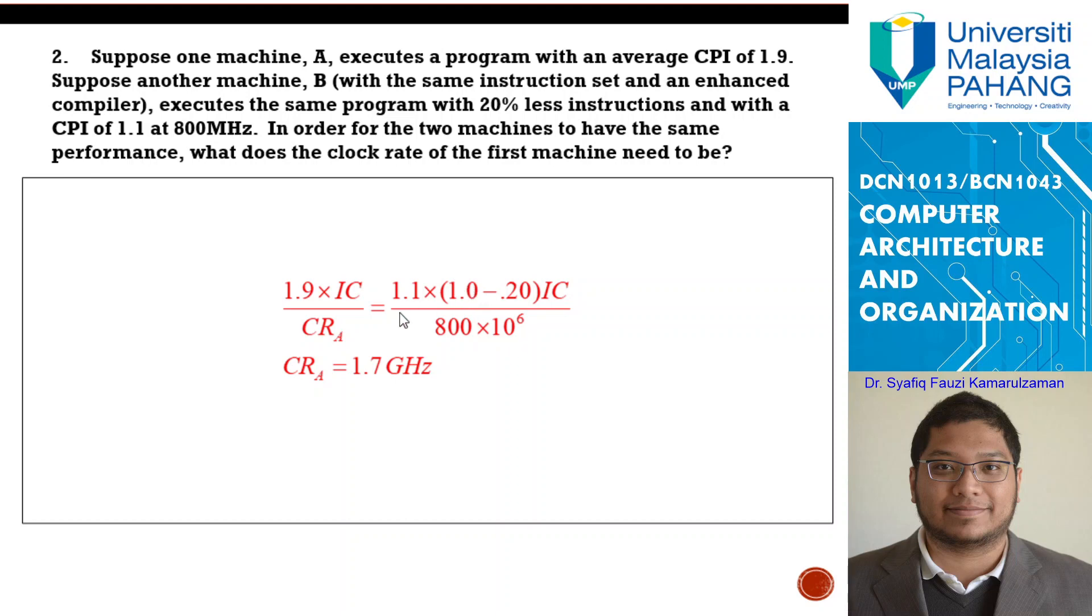This is a comparison between two PC and you want to know with certain specification, what exactly the machine A specification so that it can perform as well as the machine B. Here on the left side is machine A, on the right side is machine B. The instruction count in this case is considered the same. We don't have to put anything here. And here 1.9 the CPI for computer A, for machine A, 1.1 is for PCB. In this case here, we have 20% less instruction. Means that the instruction count is 20% less. Here in this case is 80%, 80% of what computer A should be, divided by the speed of the machine B.